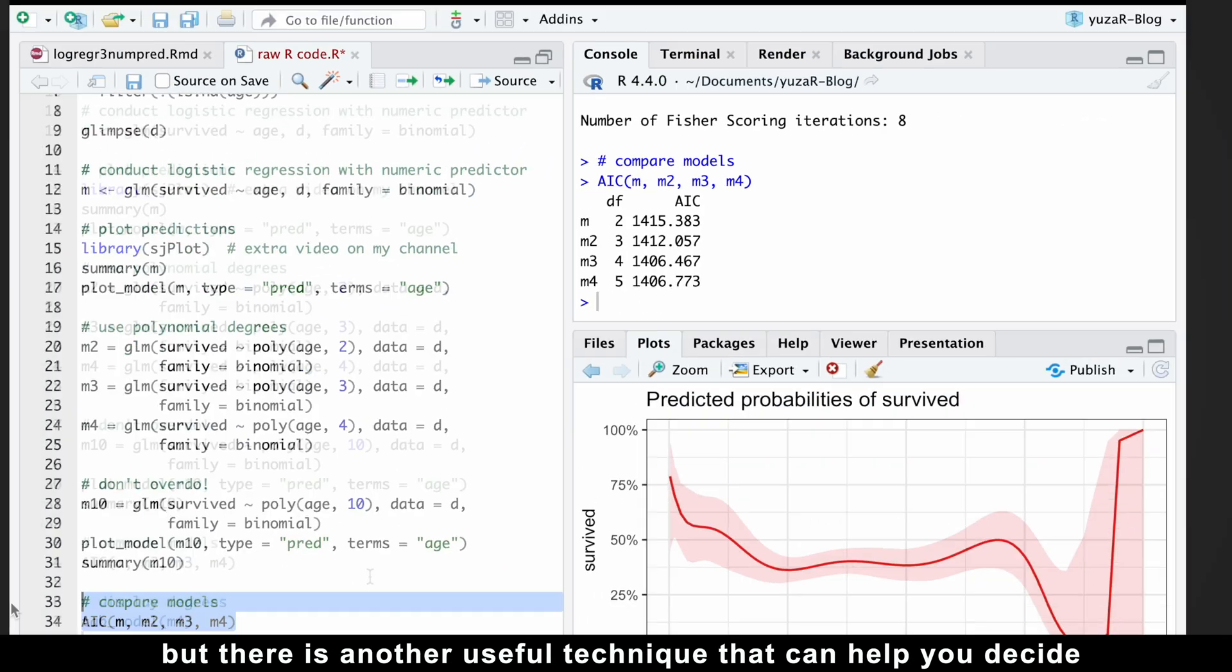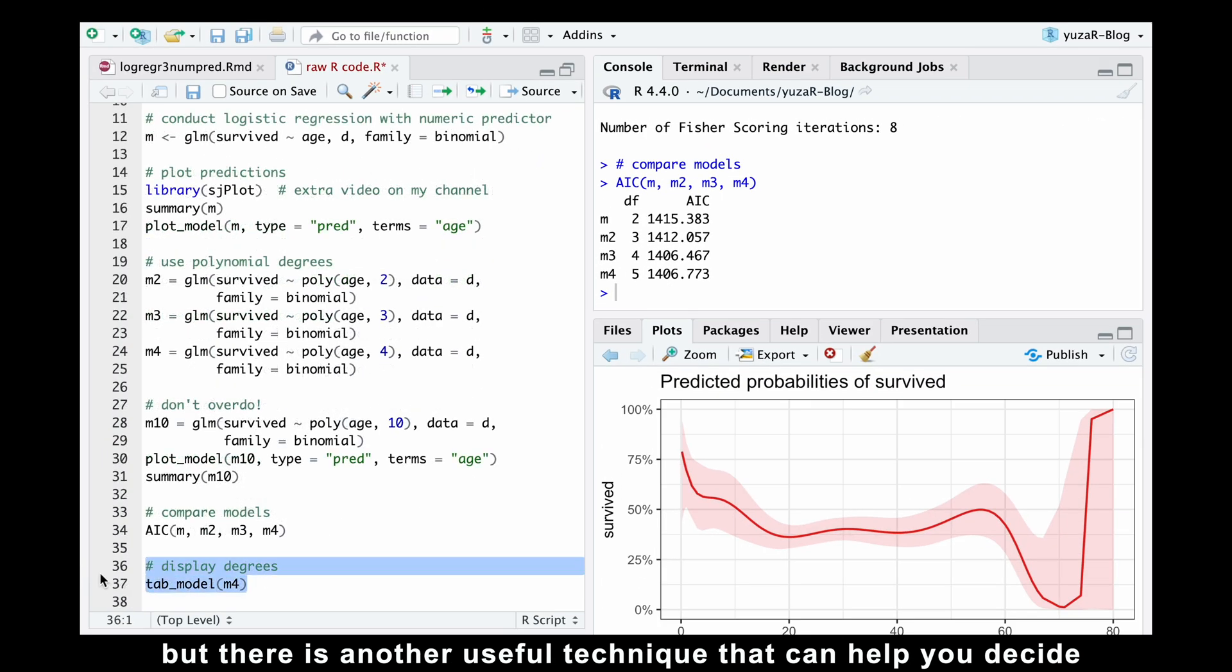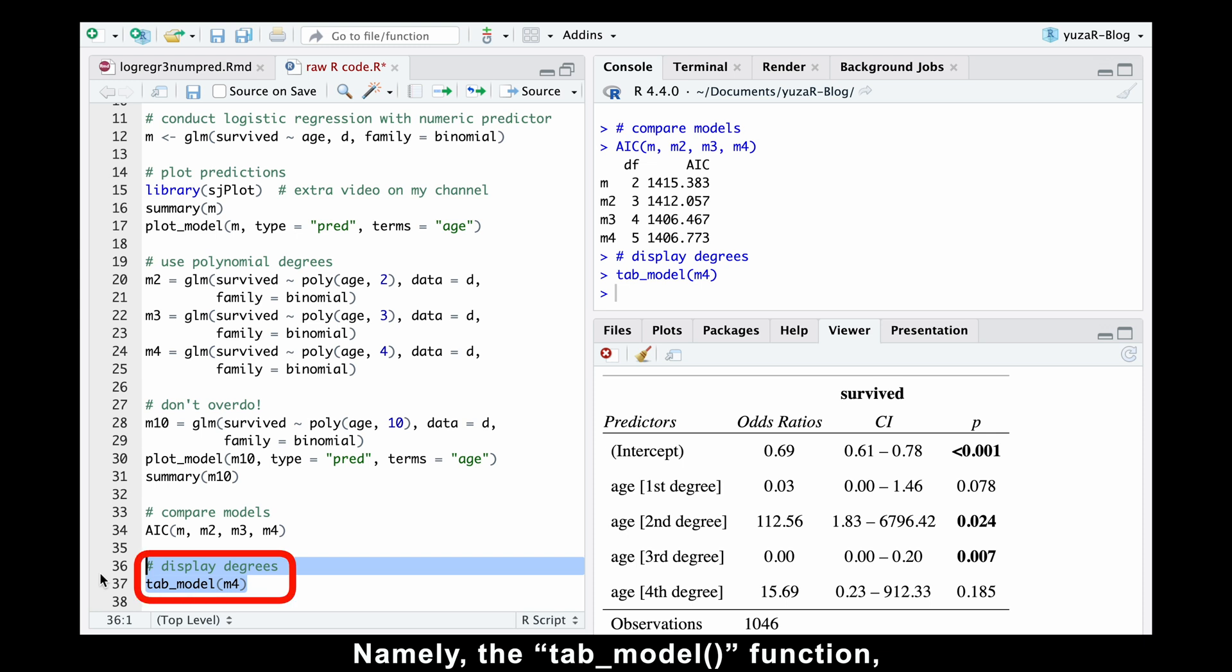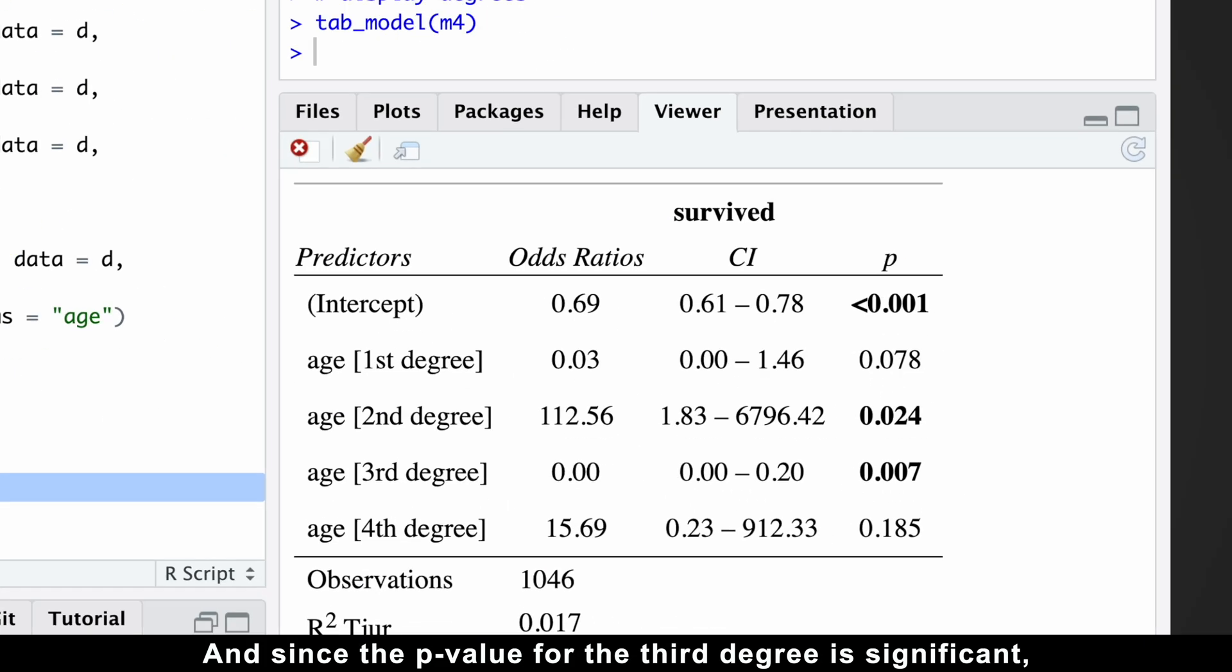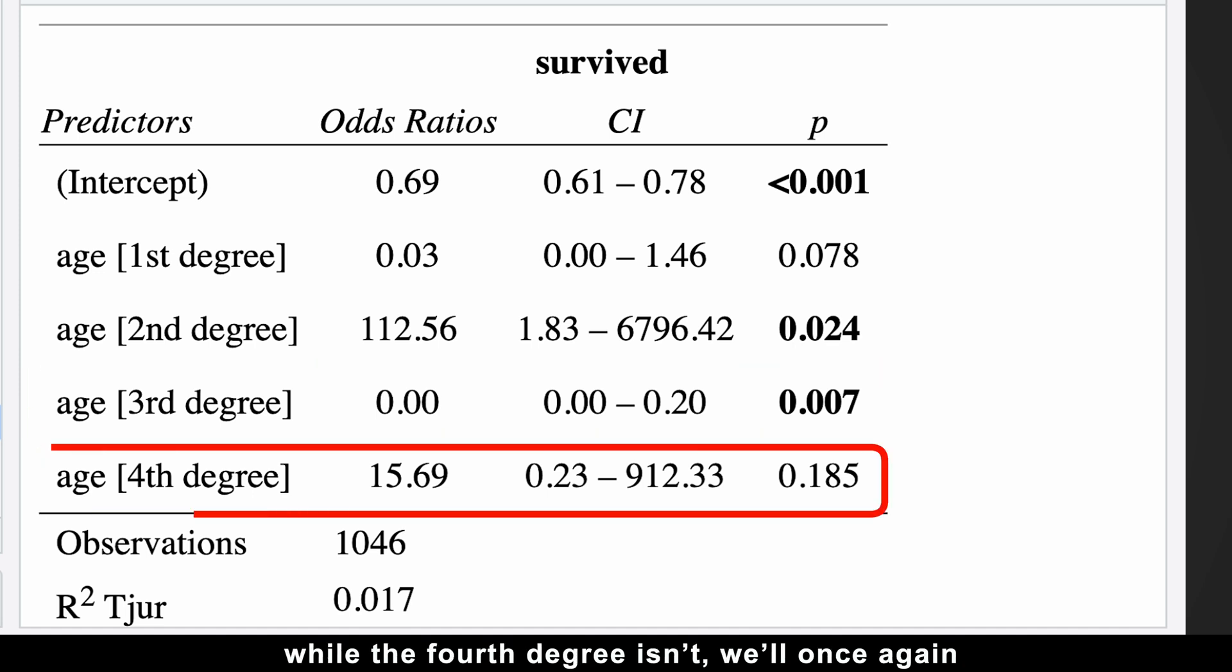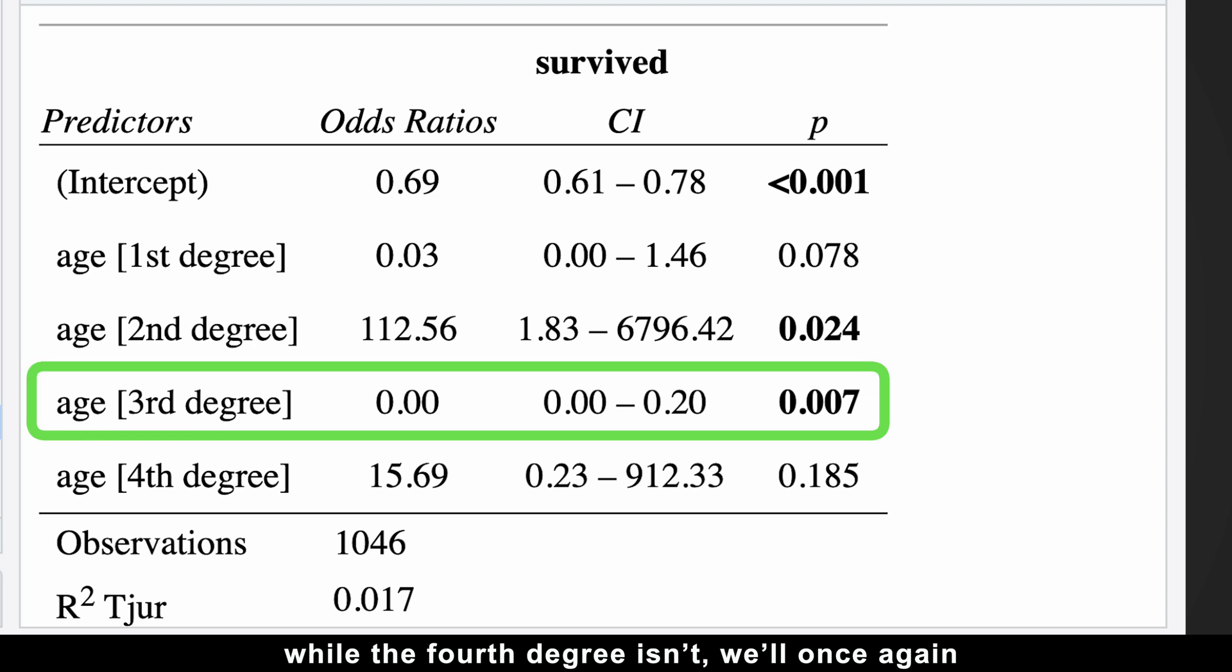But there is another useful technique that can help you decide which polynomial degree to choose. Namely, the anova function, which displays p-values for each degree. And since the p-value for the third polynomial degree is significant, while the first degree isn't, we'll once again choose the model with the third polynomial degree.